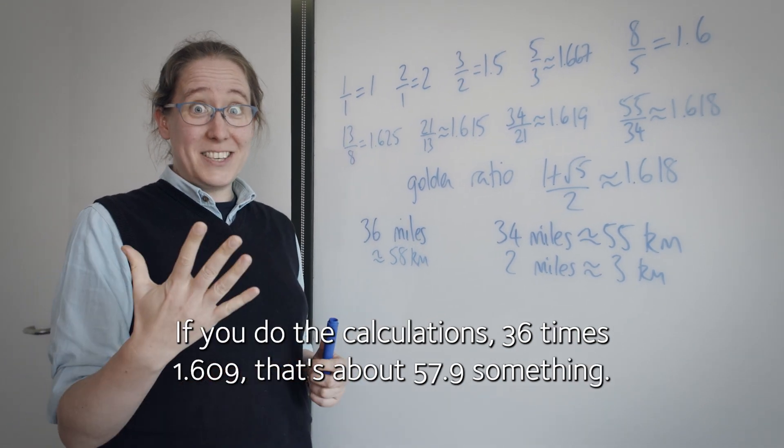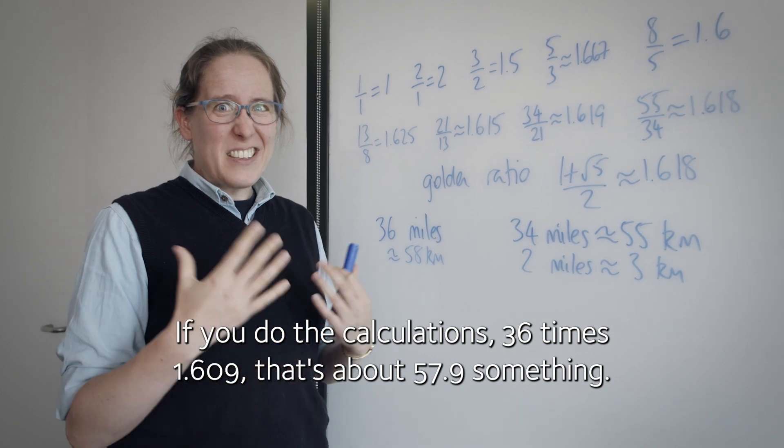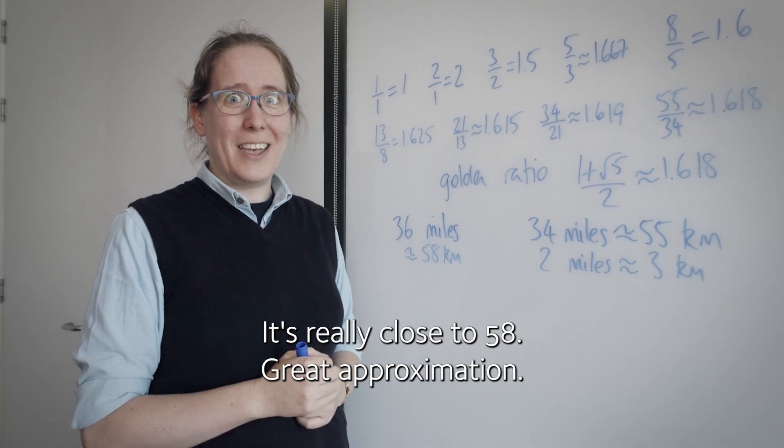If you do the calculations, 36 times 1.609, that's about 57.9 something. It's really close to 58. Great approximation.